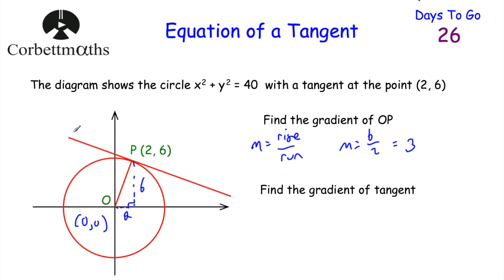Next we've been asked to find the gradient of the tangent. Remember, the radius and the tangent are perpendicular to each other, at right angles. So we know the gradient of the radius — we find the negative reciprocal of that. The negative reciprocal of 3: the reciprocal of 3 is a third, so the negative reciprocal is minus one third. So the gradient of the tangent is minus one third. We can also check that the two gradients multiply to give negative 1, which they do — confirming they're perpendicular.